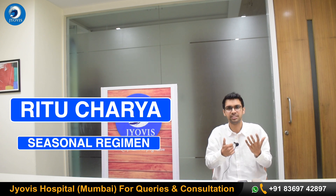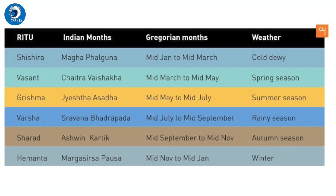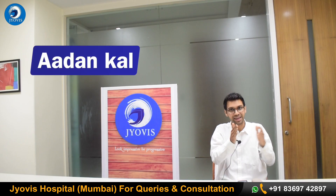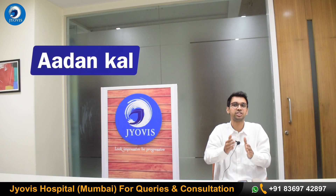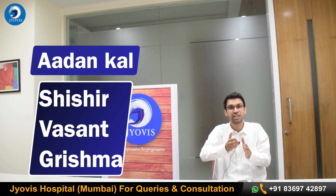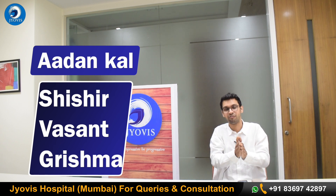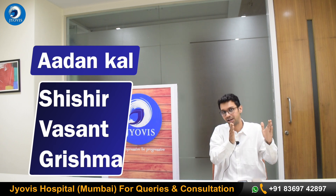There are six seasons. Shishira, Vasanth, and Grishma are three seasons which fall in the Adan Kaal category. Then there is Varsha, Sharad, and Hemant, which fall into the Visarga Kaal category. I'll put the months and dates on screen so you can go through them. The Adan Kaal ends and the Varsha Ritu starts in mid-July.